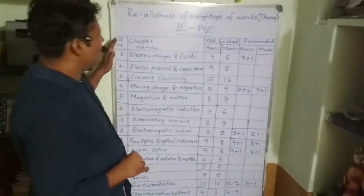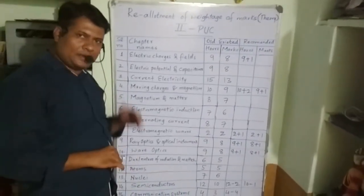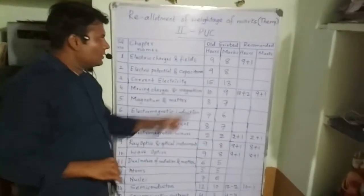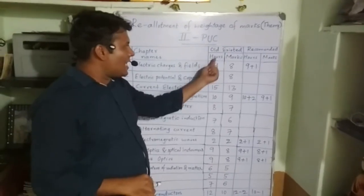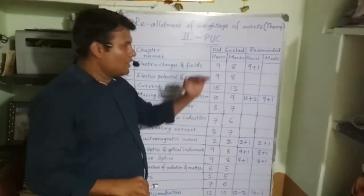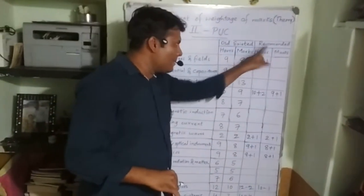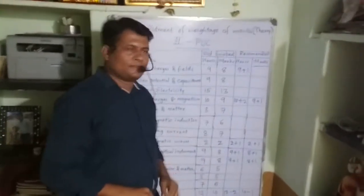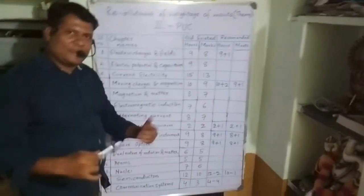I have made four columns here. The first is for the serial number and chapter number, the second is for chapter names, the third explains the old existing hours and marks, and the fourth is the recommendation made by the PUC Board for hours as well as marks. They have made some updates here.